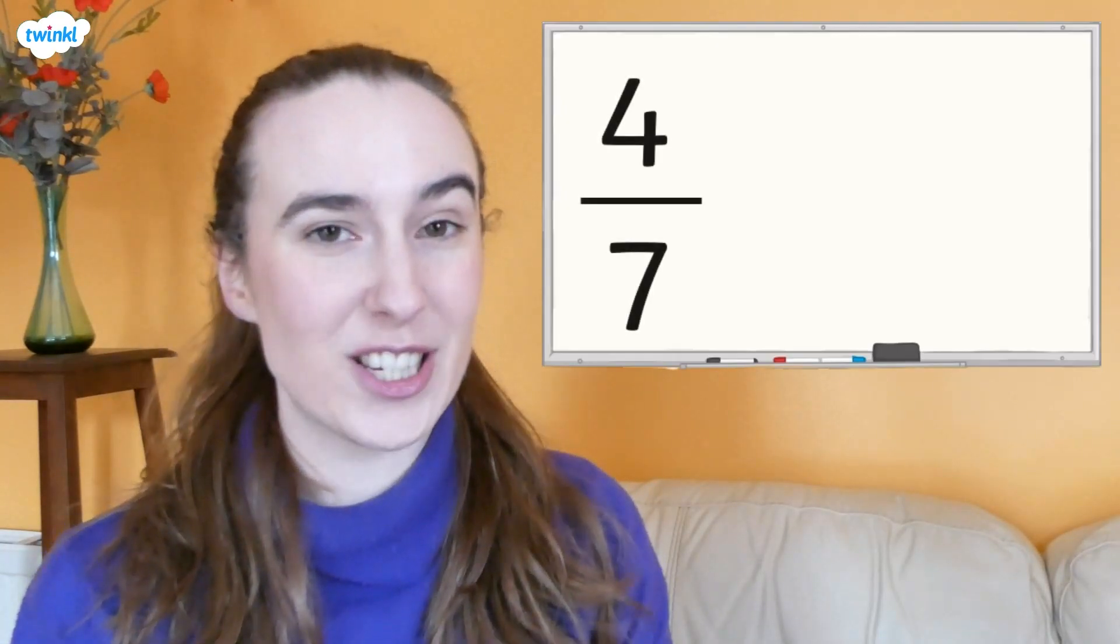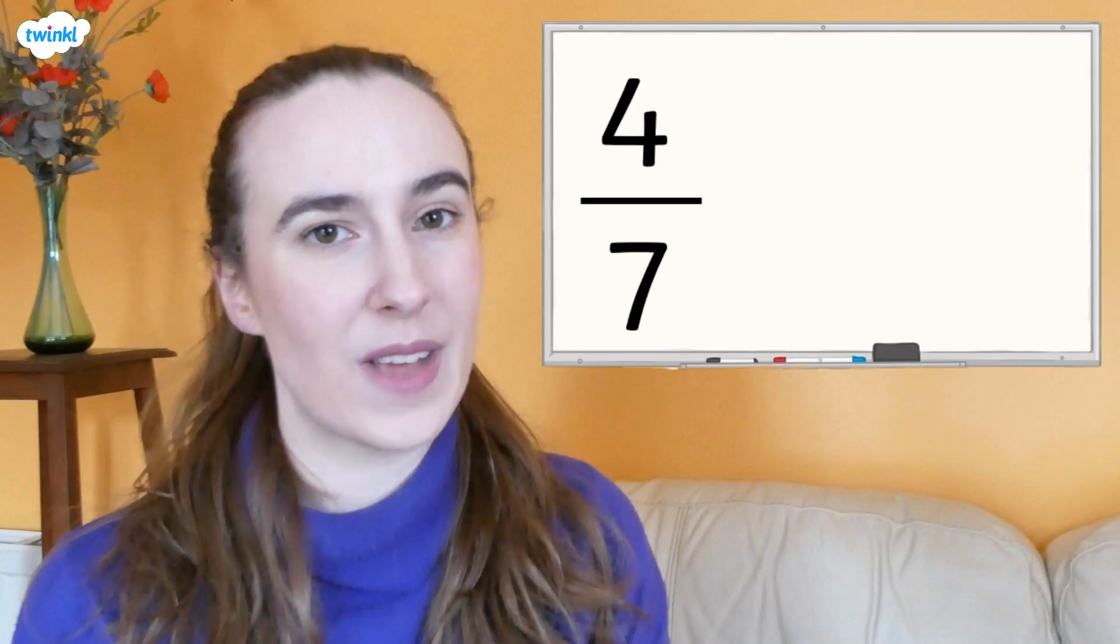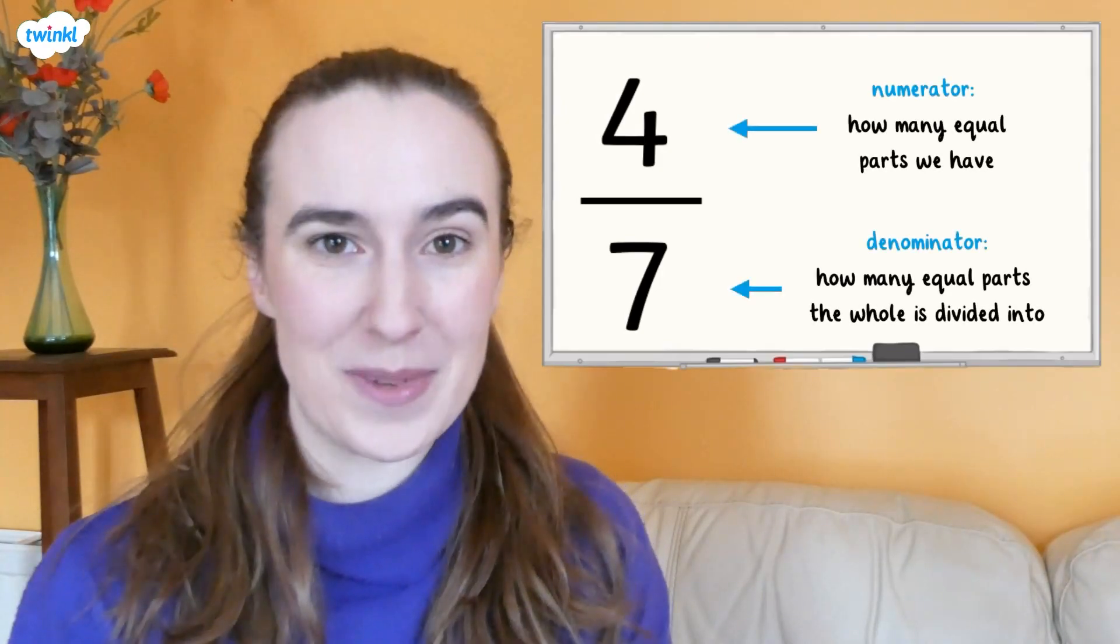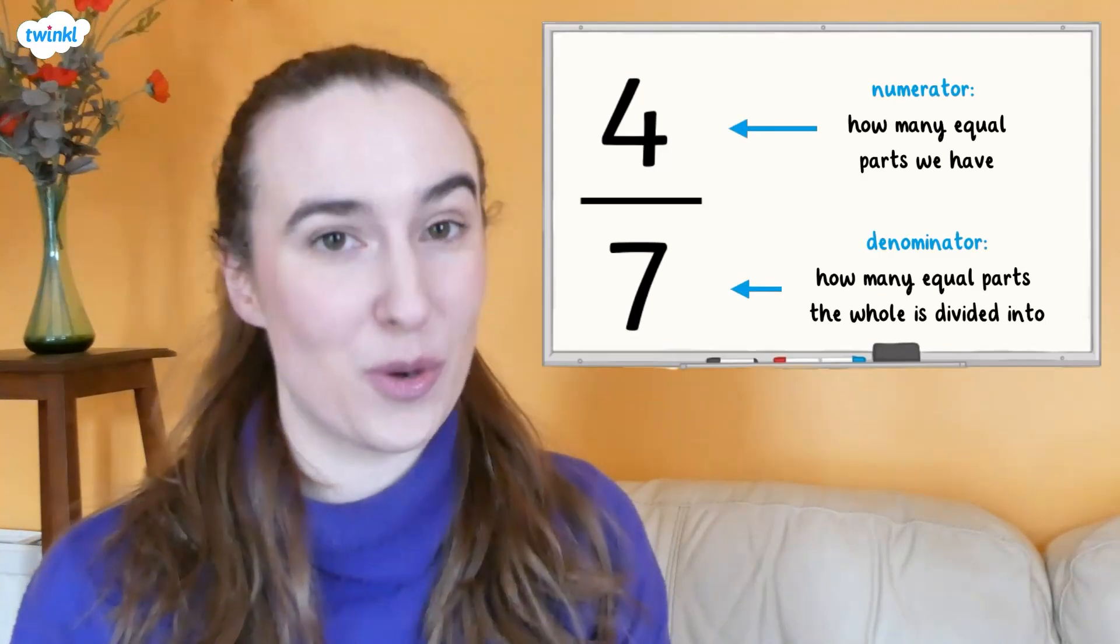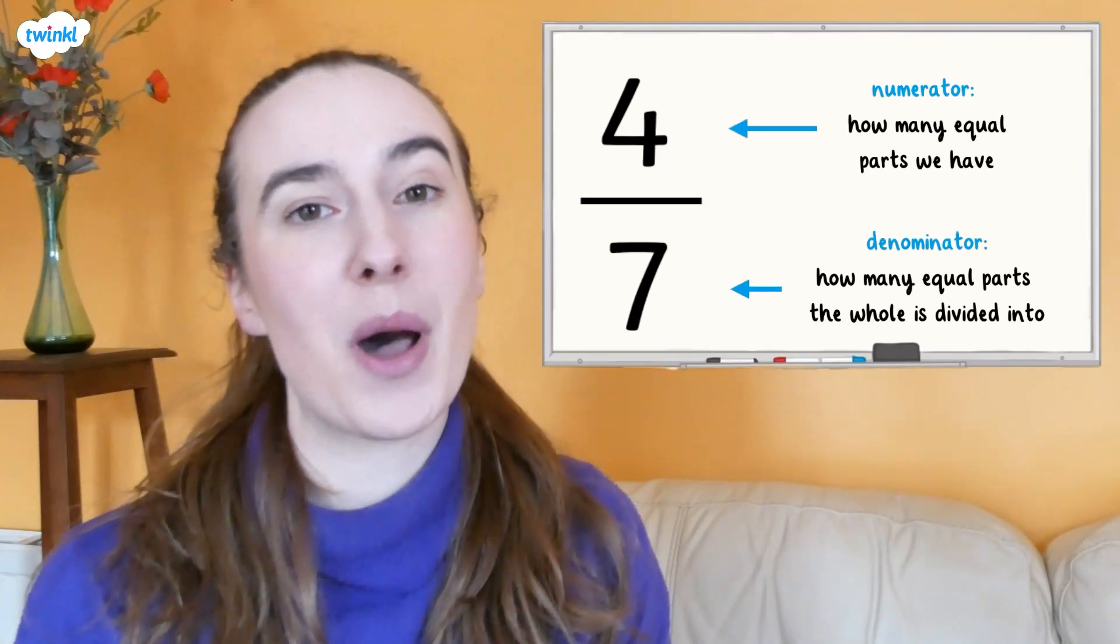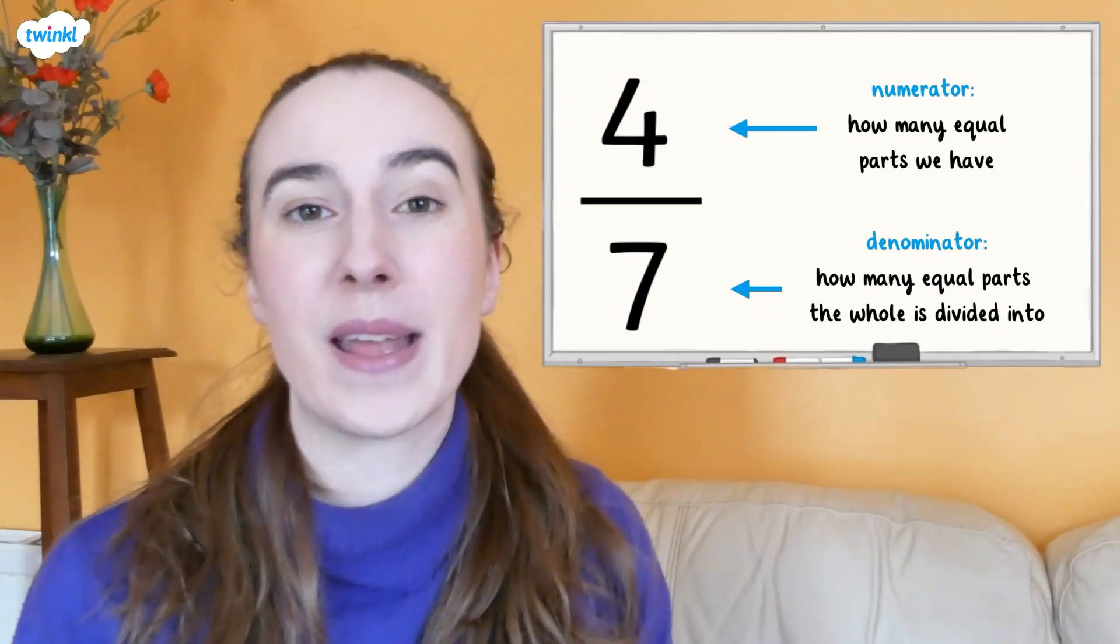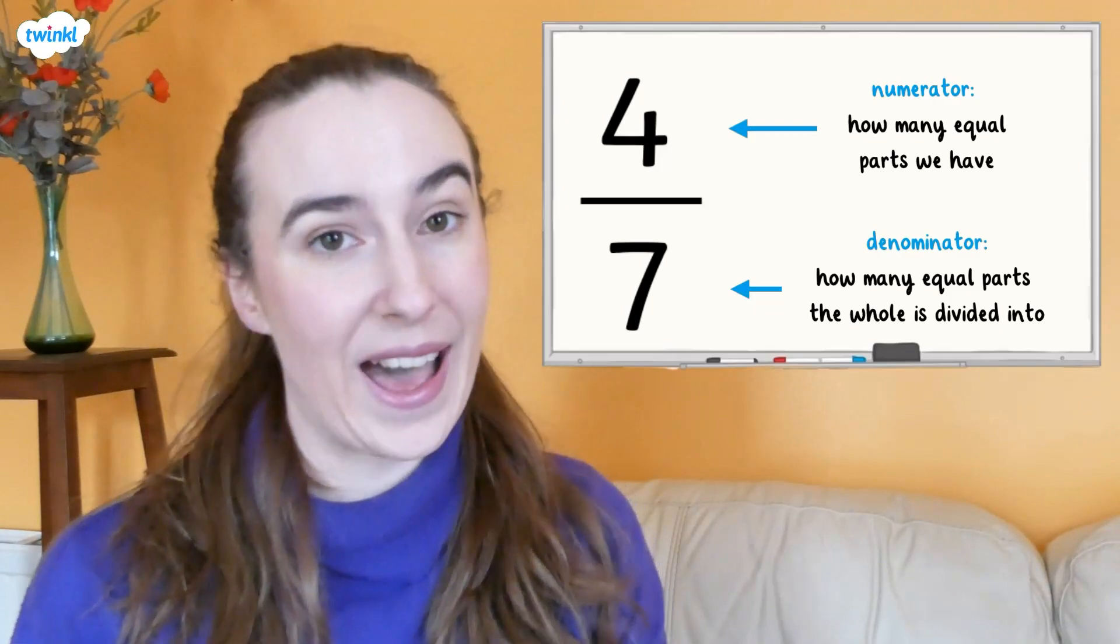A fraction is a number that represents part of a whole. A fraction has a numerator and a denominator. The denominator tells us how many equal parts the whole is divided into, and the numerator tells us how many of those equal parts we have.